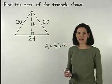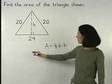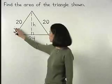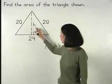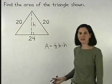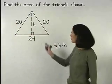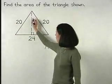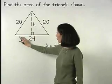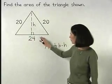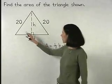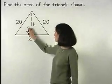Notice that the original triangle is isosceles since two of its sides are congruent, so the segment that we've just drawn creates two congruent right triangles by hypotenuse-leg.